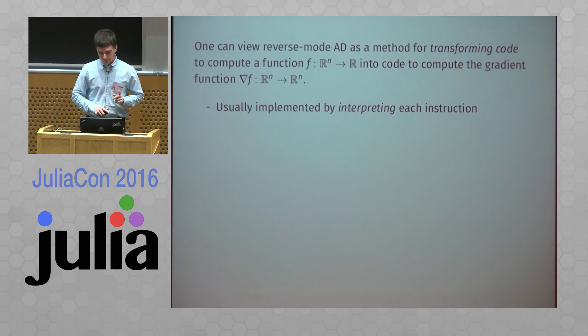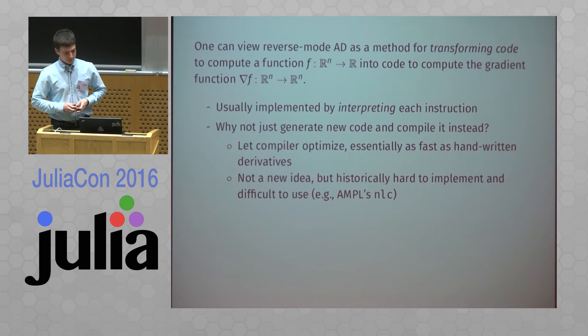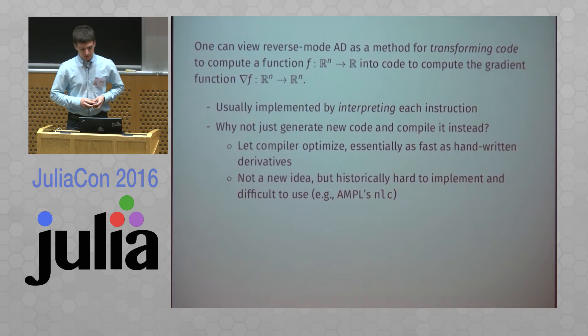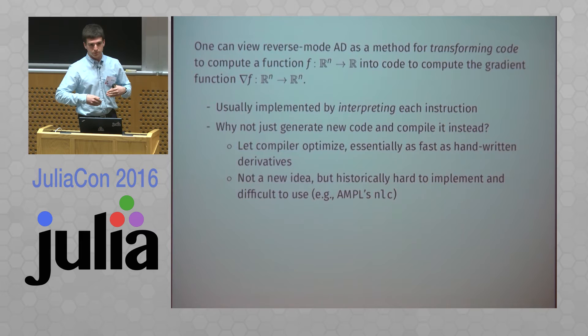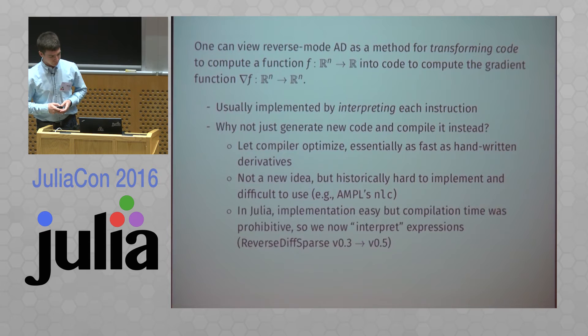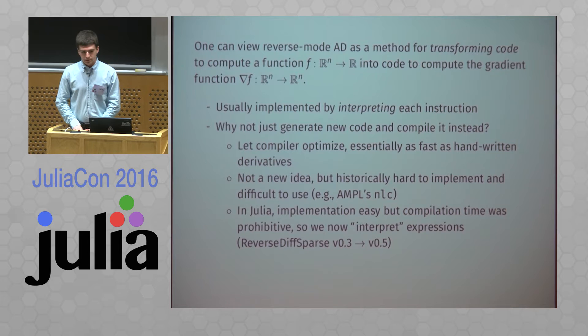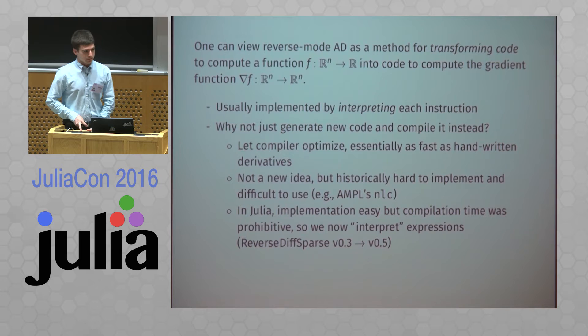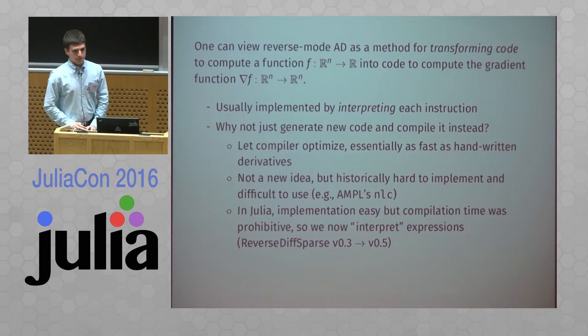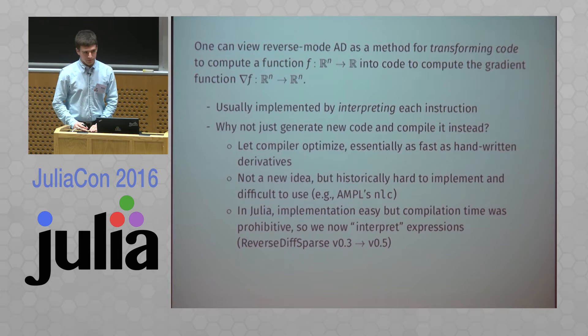Usually this is implemented by interpreting each instruction. One question we asked early on is: why not just generate new code and compile it instead? That's a pretty good idea — it lets the compiler optimize, and you could generate code that is as fast as hand-written gradient code. This is definitely not a new idea, but it's tricky to implement and make easy to use. This was actually our first approach in JuMP, but we moved away from it because of compilation time and the engineering effort. It's still a good idea worth revisiting. For now, we're just interpreting these instructions.